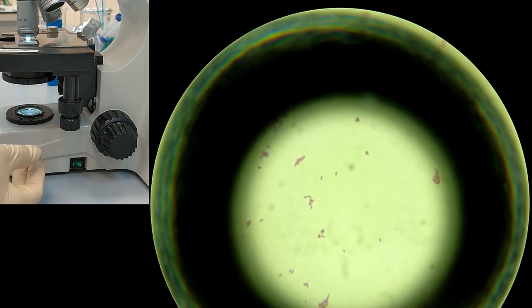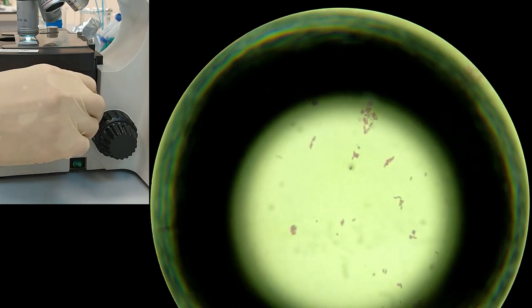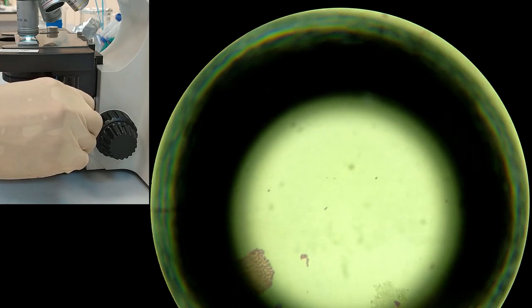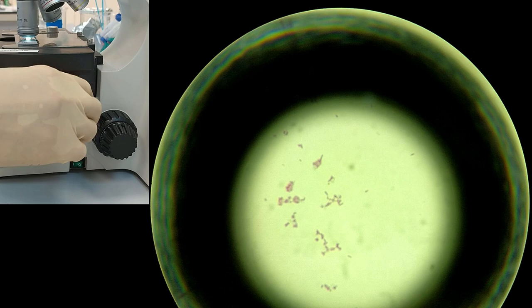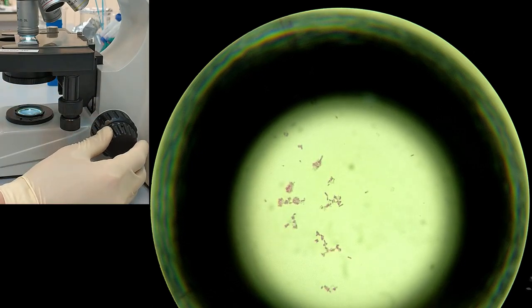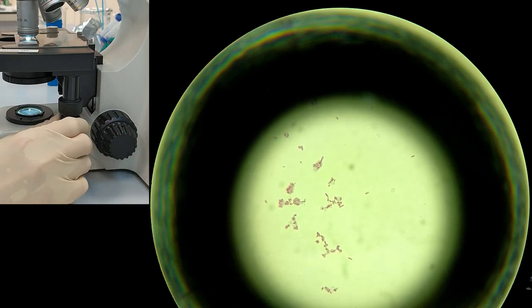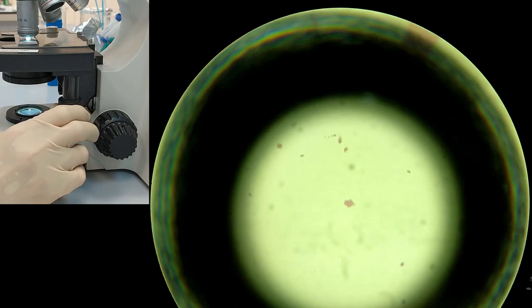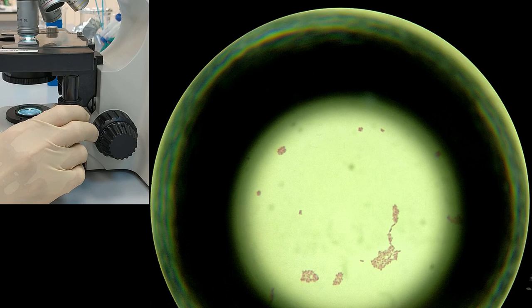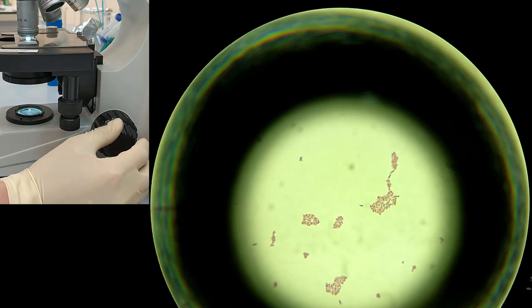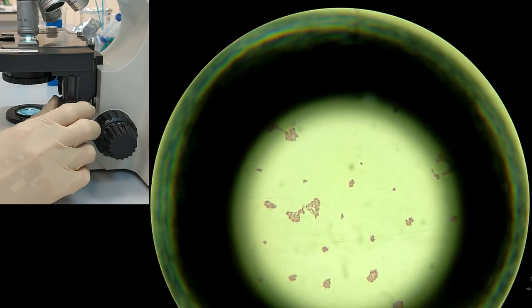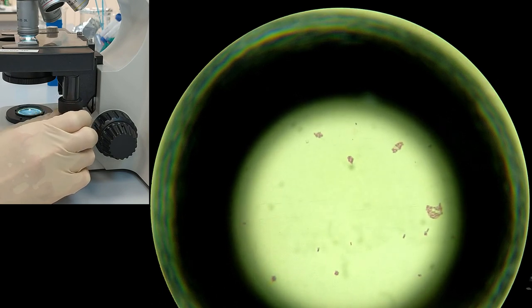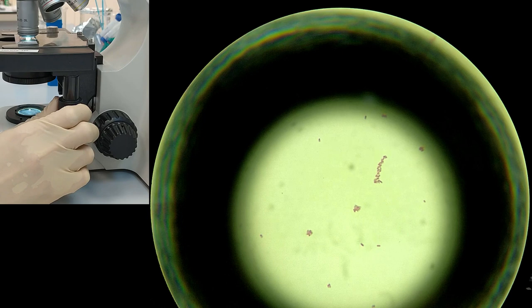Now you can see the cells. They look like small rods and they are very small. As you can see here, they are really in the shape of rods. You can find bigger colonies and single ones, like here. Just find the best view for yourself and draw them in your notebook.